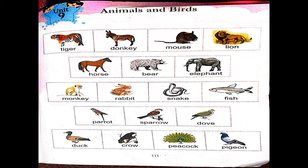So let's start. Tiger, Donkey, Mouse, Lion, Horse, and this is Bear, this is Elf, and this is Monkey. Rabbit, Snake, Fish.